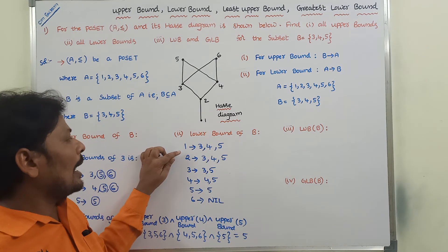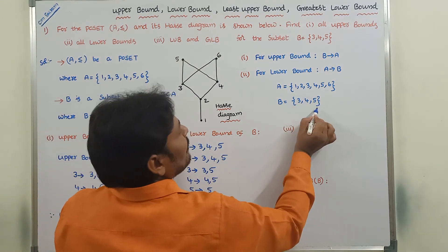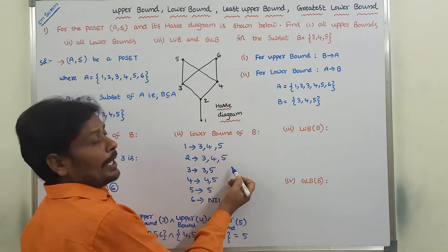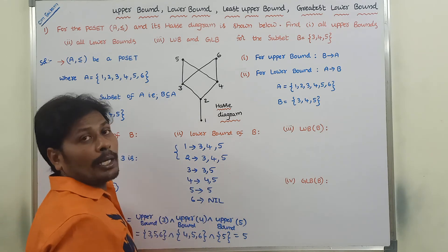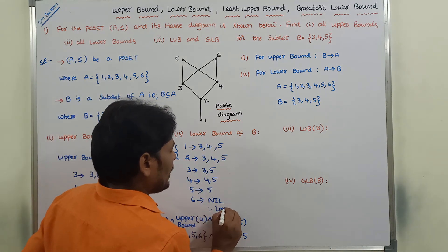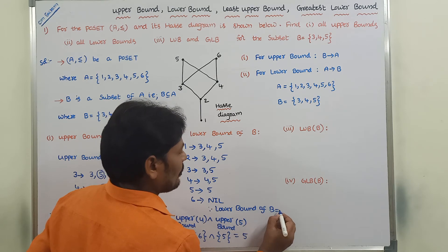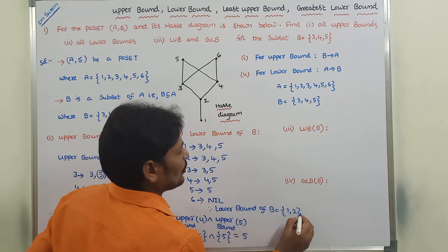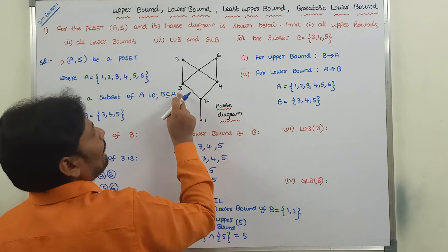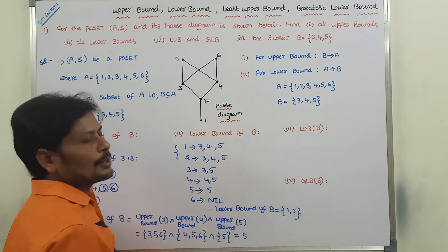So elements 1 and 2 are related with all elements of set B {3, 4, 5}. Therefore, lower bound of B = {1, 2}. For the subset {3, 4, 5}, the lower bounds are 1 and 2.